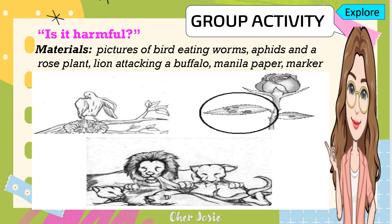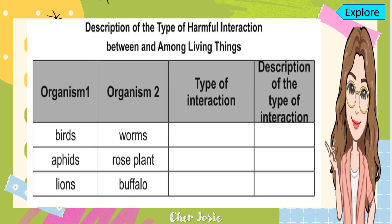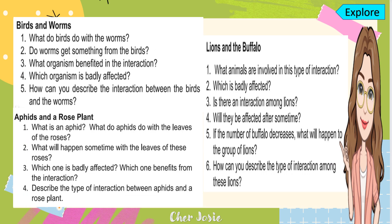Now it's time for your group activity. It is entitled 'Is it Harmful?' Here are the materials: pictures of a bird eating worms, aphids and a rose plant, a lion attacking a buffalo, manila paper, and a marker. Please follow the procedures given in your activity sheet. This is the sample table that you are going to accomplish, and here are also the guide questions you are going to answer during your activity.